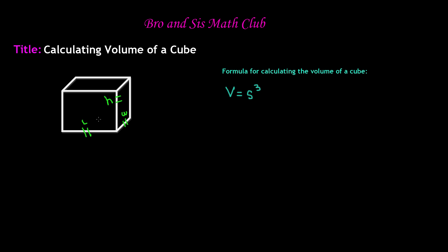So the reason we don't do length times width times height is because we really don't need to since they're the same. That is why the formula for calculating the cube is V, volume, is equal to S cubed.